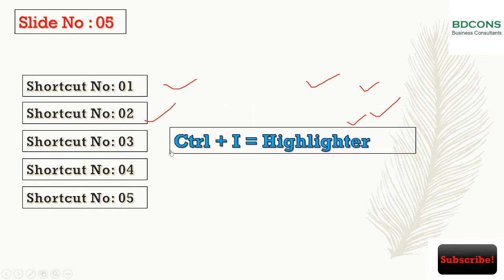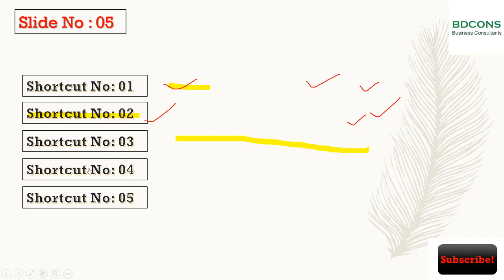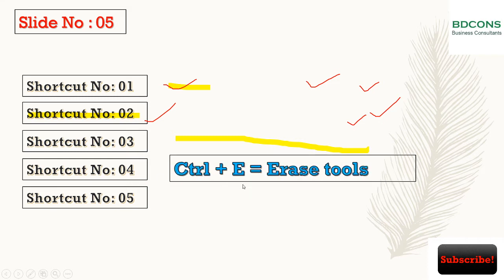Shortcut 3: Highlighter. Press Ctrl+I to get the highlighter and you can highlight your text. To remove the highlighter, press Ctrl+I again.